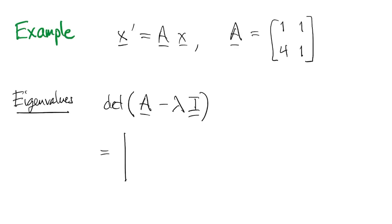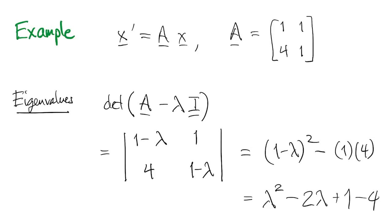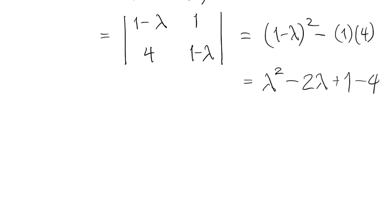We find the characteristic polynomial, which is the determinant of a minus lambda i, which means we subtract lambda from the diagonal terms and take the determinant. That works out to be lambda squared minus 2 lambda plus 1 minus 4, so that's minus 3. And that polynomial factors as lambda minus 3 times lambda plus 1.